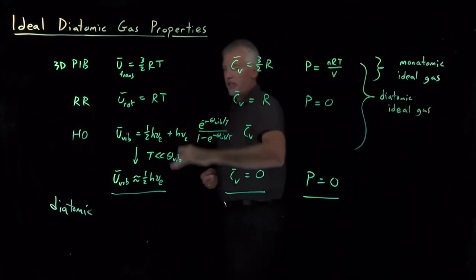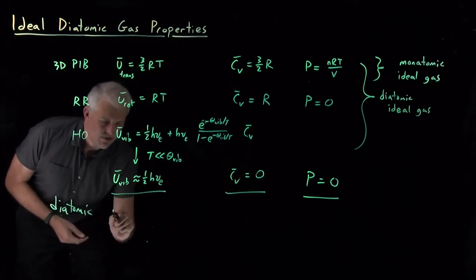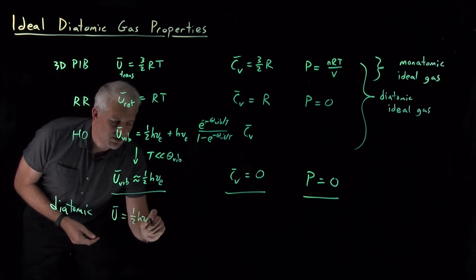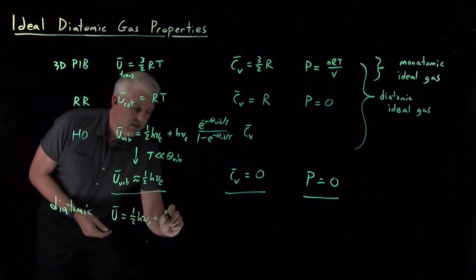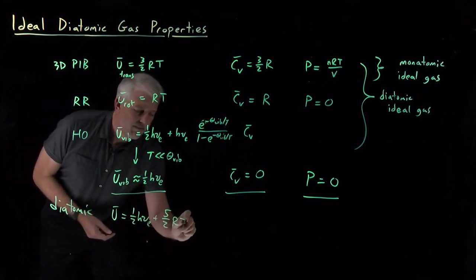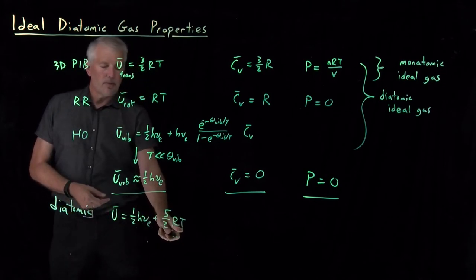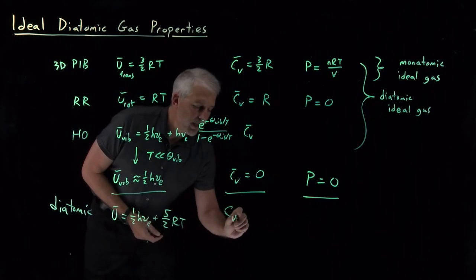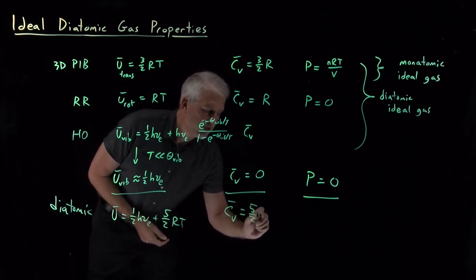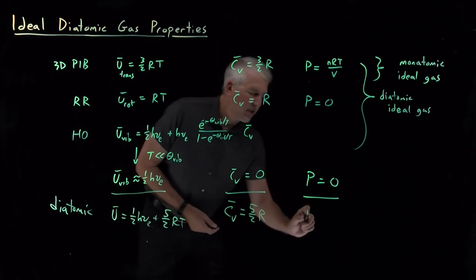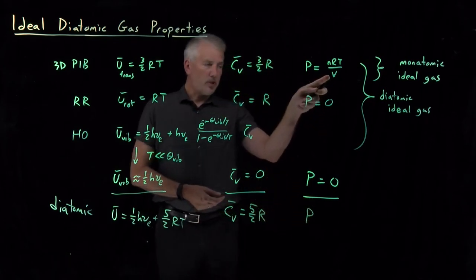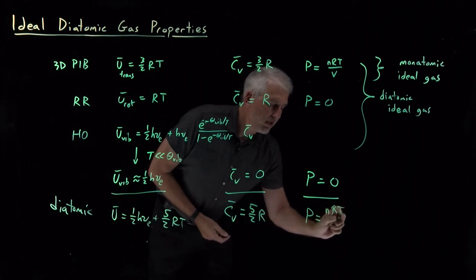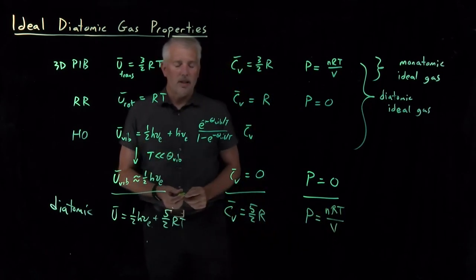Diatomic molecules include all three of these terms because they can translate and rotate and vibrate. If we sum each of these three terms, we find that the total energy of the diatomic molecule is its zero point vibrational energy plus five halves RT. The temperature dependent component of that is just five halves R times the temperature. So the heat capacity of this diatomic molecule is five halves R. And the pressure, if I sum the contribution from translation and rotation and vibration, the pressure is the equation of state that we're used to PV equals NRT.